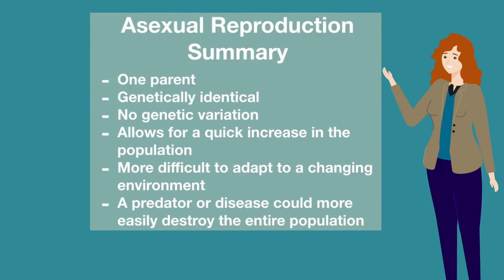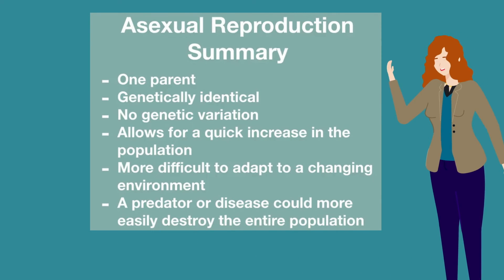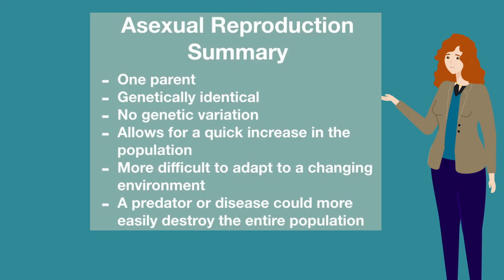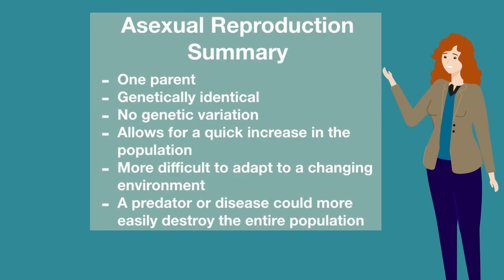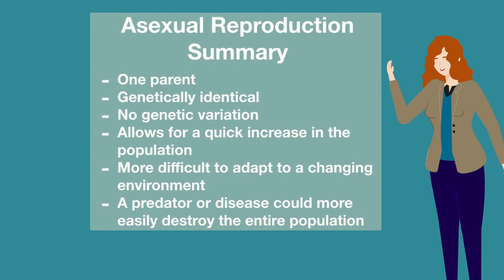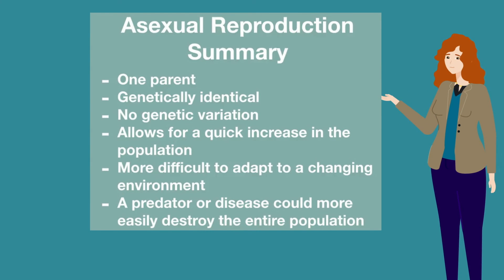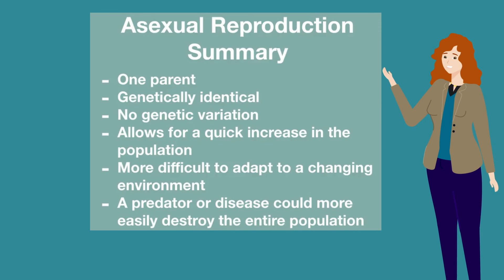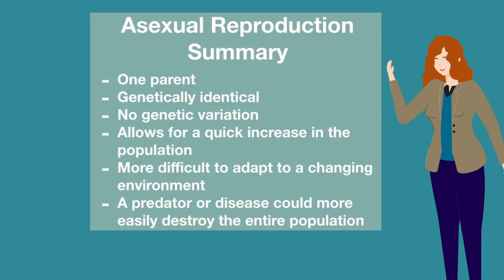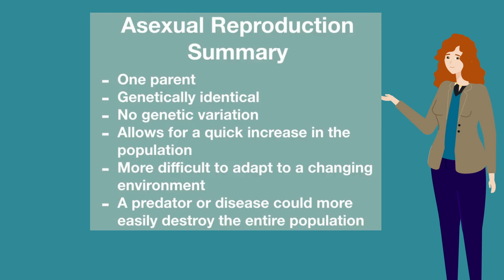To summarize: it's one parent, genetically identical, no genetic variation, allows for a quick increase in population. It's more difficult to adapt to a change in environment, and a predator or disease could more easily destroy the entire population.